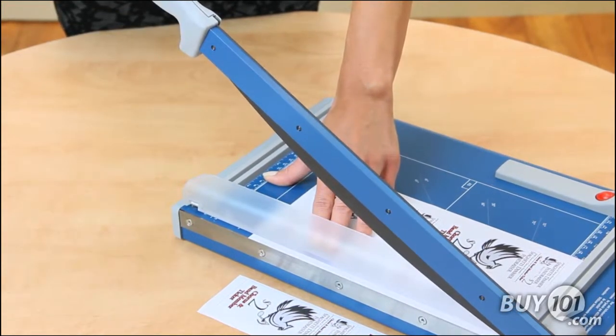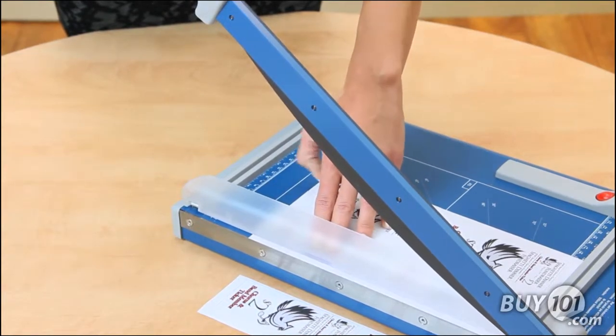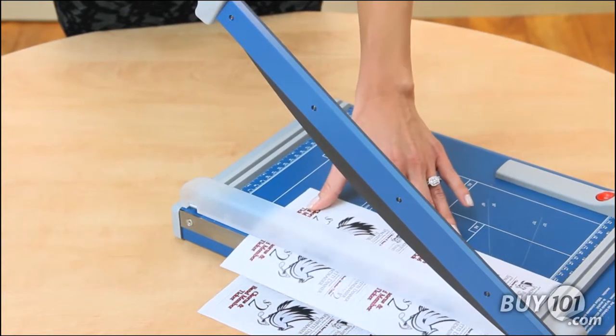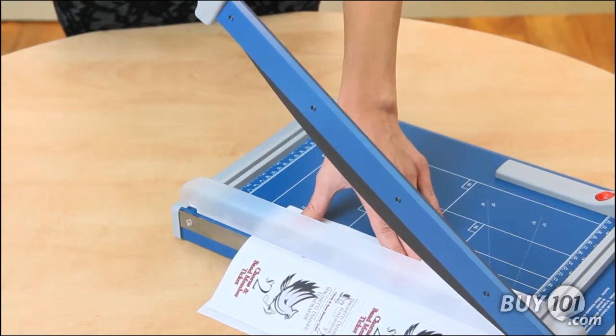The manual hand clamp prevents paper from shifting and doubles as a protective guard to keep fingers safe.